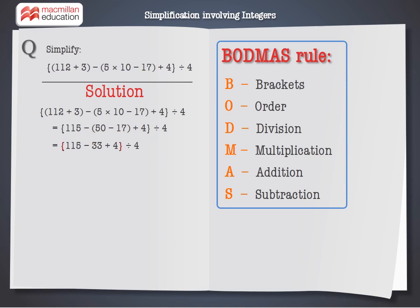Now do the simplification in the outermost bracket. We do the addition of terms having similar signs, i.e. 115 plus 4. 115 plus 4 gives 119. And 119 minus 33 gives 86.